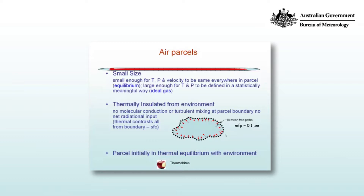An air parcel needs to be thermally insulated from the environment: no molecular conduction or turbulent mixing at the parcel boundary, and no net radiational input. And so there's a thermal contrast all along the boundary between what's inside and what's outside.